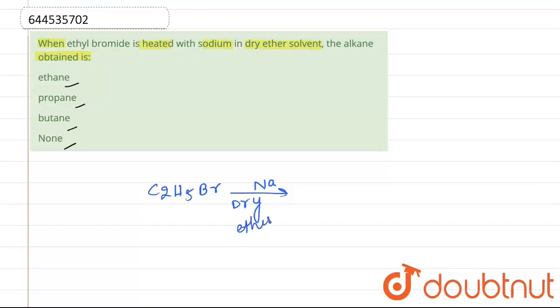In presence of sodium and dry ether when this is heated, this leads to the formation of C4H10. So C2H5 and C2H5, this is our C4H10, plus we get Br2.